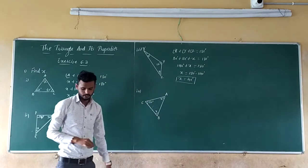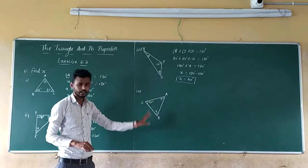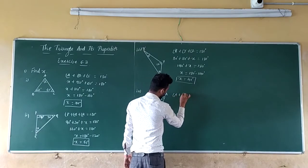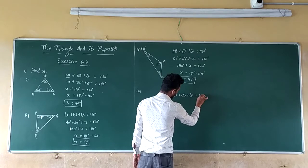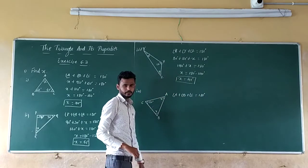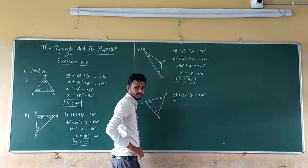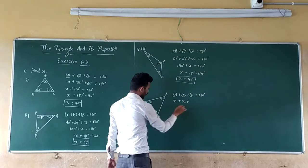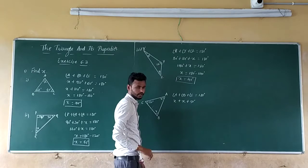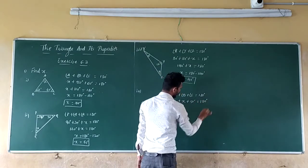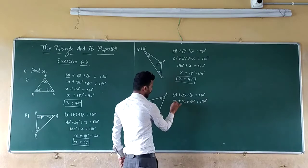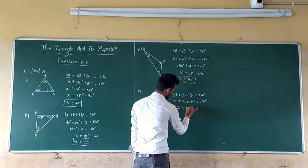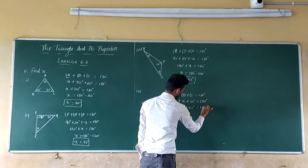I have named this as triangle ABC. So now angle A plus angle B plus angle C, which is equal to 180 degrees. Angle A is X, plus angle B is X, plus angle C is 50 degrees, which is equal to 180 degrees. So X plus X — how many X are there? Two. So write 2X plus 50 degrees, which is equal to 180 degrees.